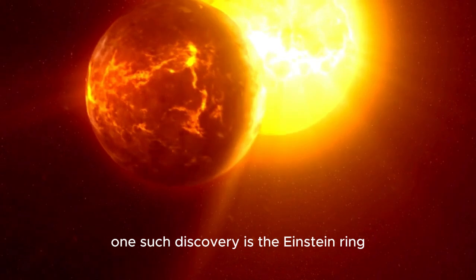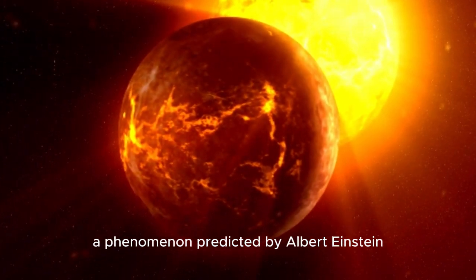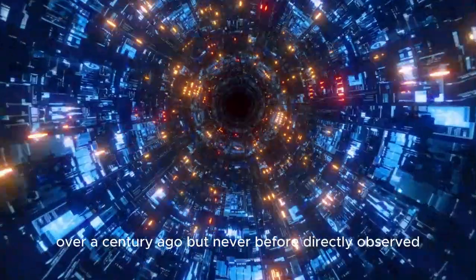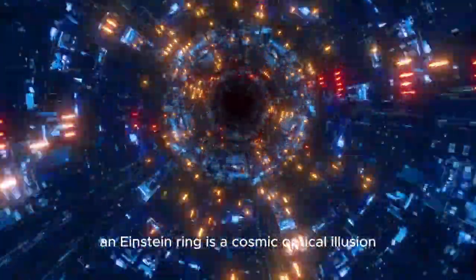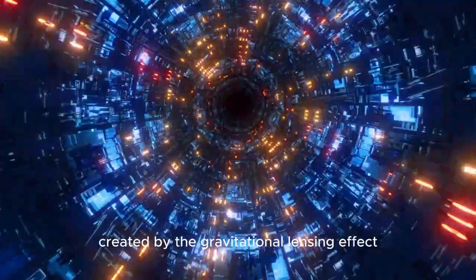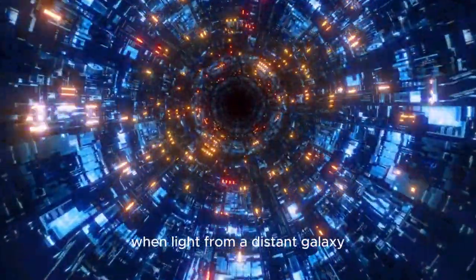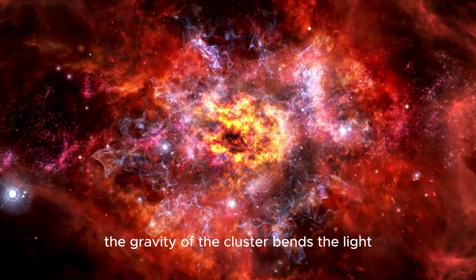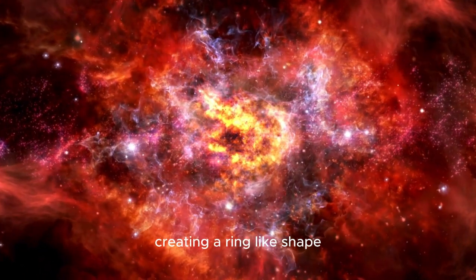One such discovery is the Einstein ring, a phenomenon predicted by Albert Einstein over a century ago but never before directly observed. An Einstein ring is a cosmic optical illusion created by the gravitational lensing effect. When light from a distant galaxy passes through a massive galaxy cluster, the gravity of the cluster bends the light, creating a ring-like shape.